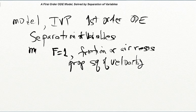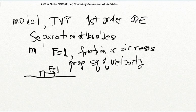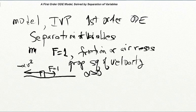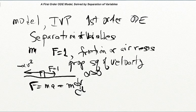Let's model it now via a small diagram as well as the differential equation. Here's our table — it's supposed to be flat. Here's the mass, which we think of as a point mass, and it's subject to two forces: the constant force pulling it to the right, F equal one, and the drag force slowing it down, proportional to the square of the velocity. It's minus alpha v squared because it's impeding the motion, and alpha is a positive constant of proportionality. The differential equation comes from Newton's second law, F equals ma, where a is the derivative of the velocity. So m dv/dt is the sum of the forces — the force pulling to the right and the force slowing it down.